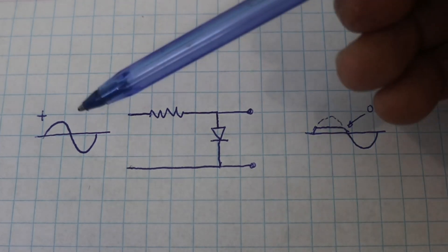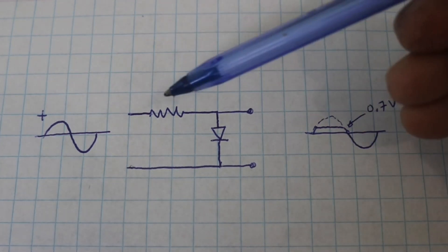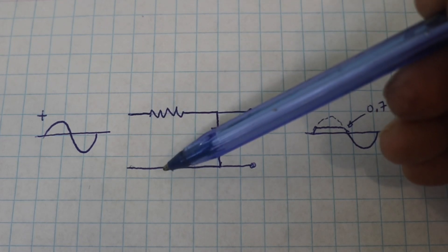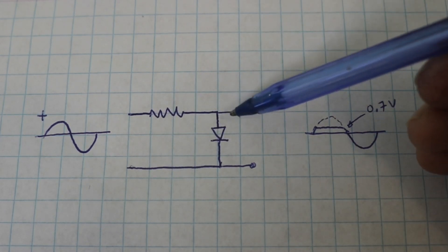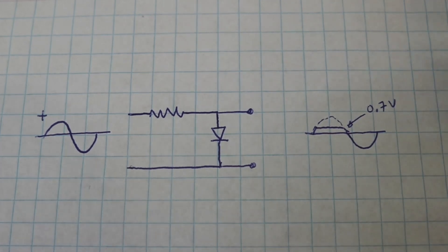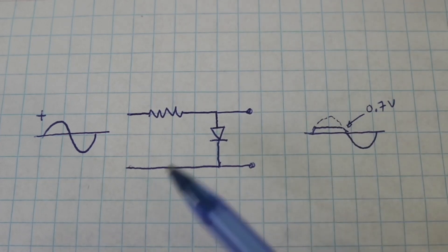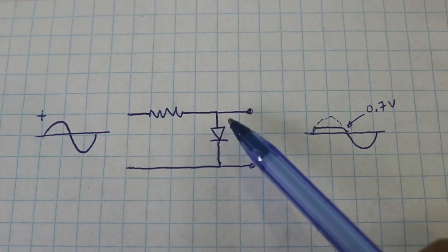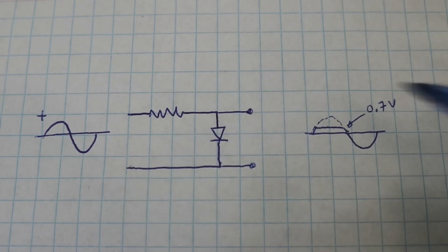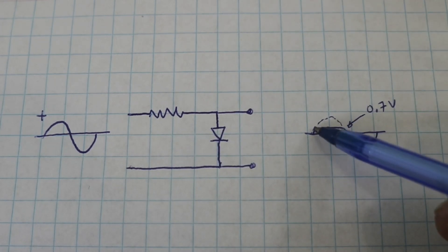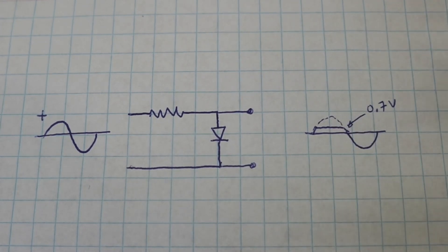Now in the positive semi-cycle we have positive here and negative here. So the diode will conduct the current but only when the voltage is higher than 0.7 volts. So below 0.7 volts it's like there is no diode here.